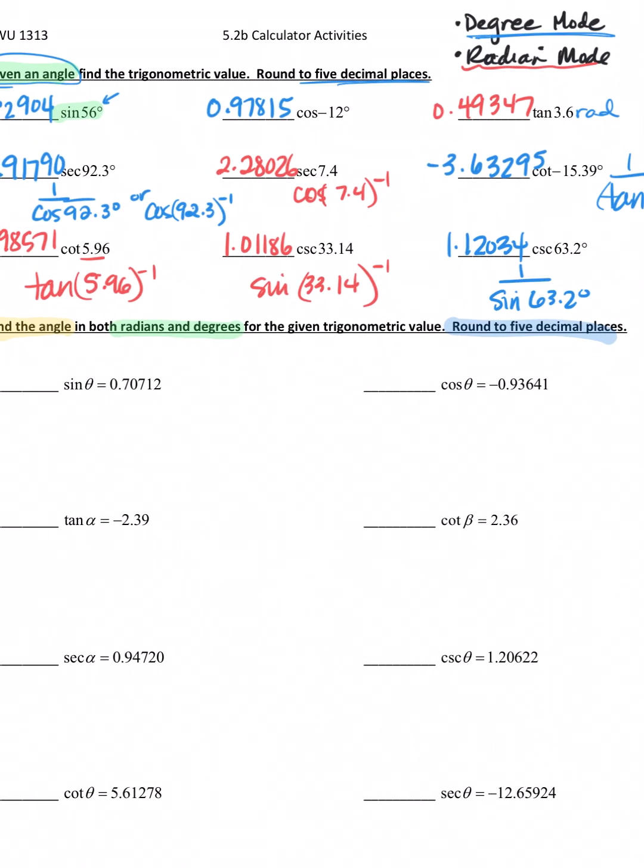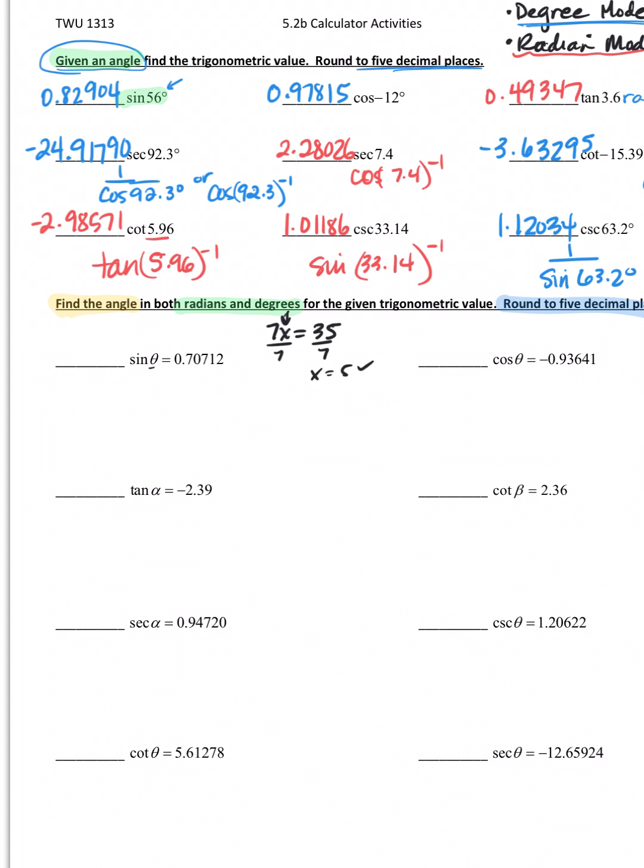Before I jump into the trig stuff, let's look at how we're going to solve this. It's very much like solving a basic algebra equation. We have to isolate x - we would divide by 7 and get x equals 5. Same idea - we need to isolate theta. The way we're going to do that is taking the inverse. What you do to one side, you have to do to the other side. These two will cancel each other out and it'll just be theta equals the inverse sine of 0.70712.